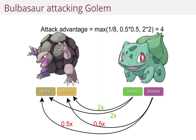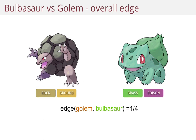What if we turn the tables and let Bulbasaur attack Golem? Well, if he uses a grass type move, the total multiplier is 4, and if he uses a poison type move, the total multiplier is one fourth. Of course Bulbasaur is going to do what's in his best interest and use a grass type move. So the attack advantage of Bulbasaur when he meets Golem is 4. If we look at both of these factors and divide them, we'll get the edge or the overall advantage in this match. The edge of Golem against Bulbasaur is one fourth, meaning Bulbasaur is very likely to win this match.